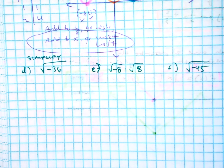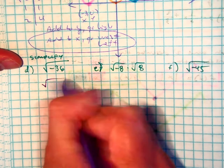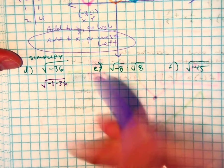Alright, in these examples, we need to simplify so I can factor out a negative 1. So negative 1 times 36.